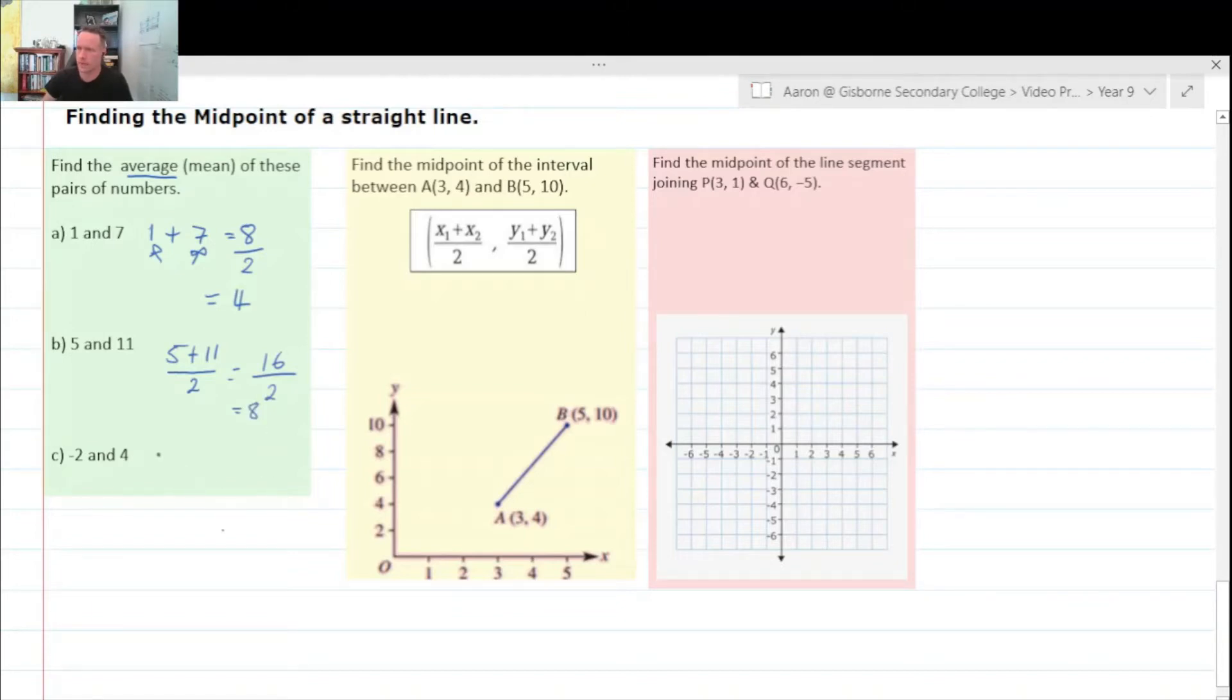And last of all, negative two plus four. Put that as a two again, because each one of these has two values, so one there, one there, et cetera, et cetera. And negative two plus four, so we start negative two, add four, and we get to two. Two divided by two equals one.